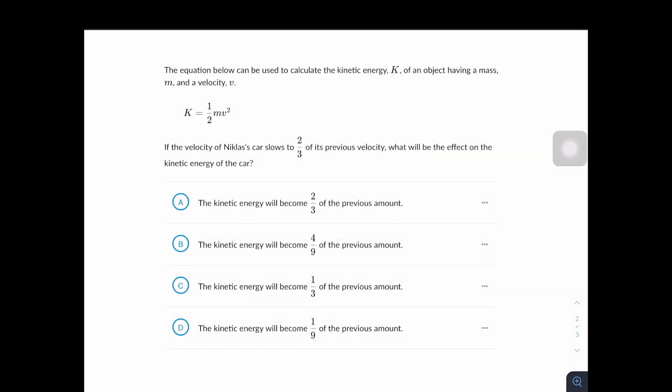The equation below can be used to calculate the kinetic energy K of an object having a mass m and a velocity v. If the velocity of Nicholas' car slows to two-thirds of its previous velocity, what will be the effect on the kinetic energy of the car?